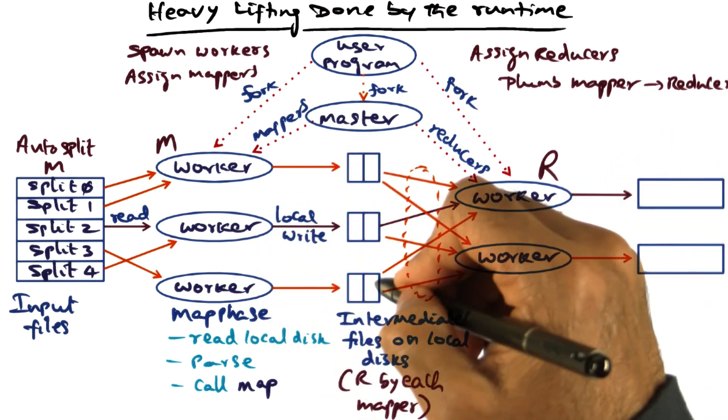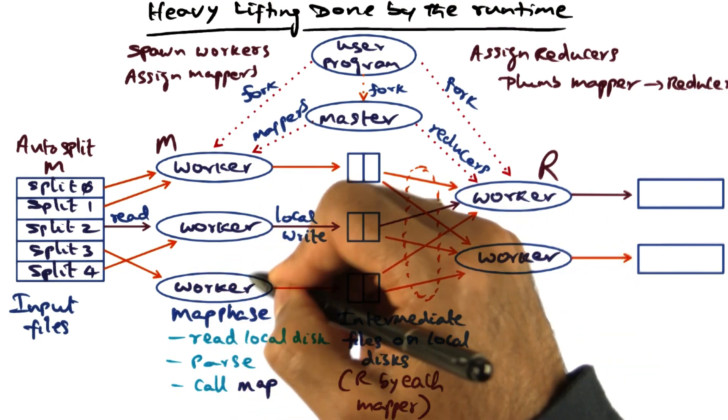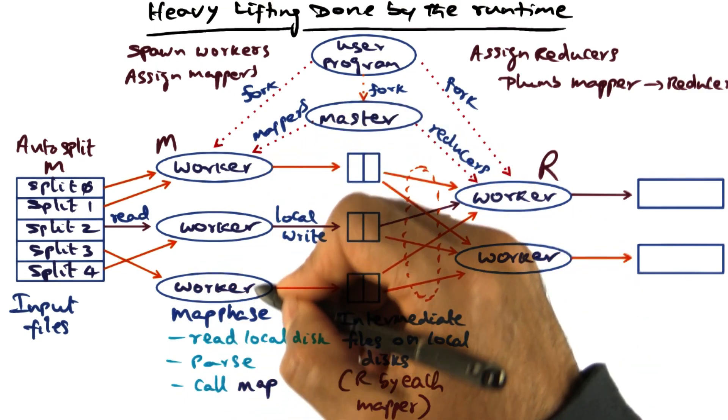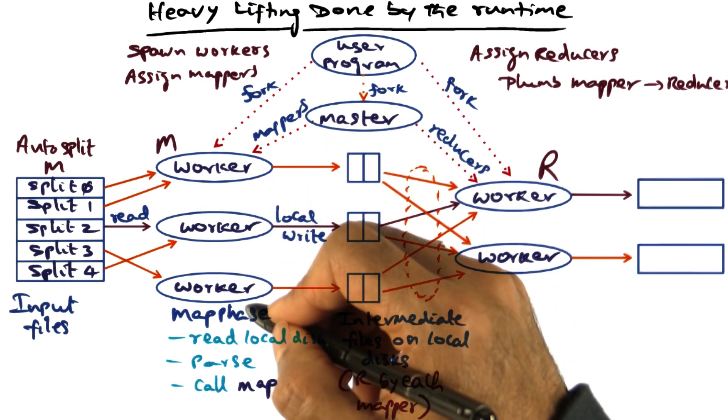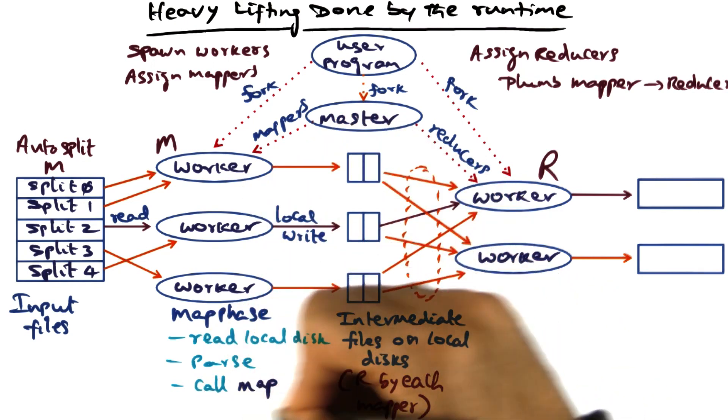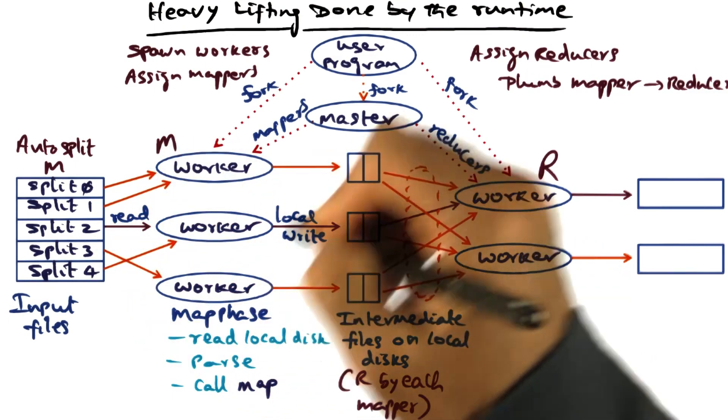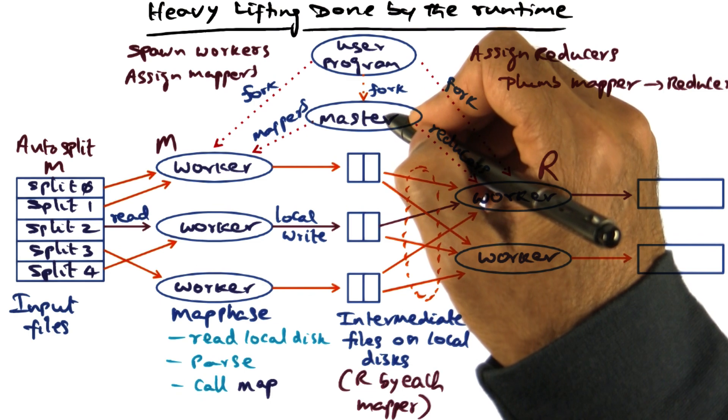All of these intermediate files are stored on the local disk associated with each of these computational nodes carrying out the worker function corresponding to the map phase. When they are done with the map operation for the split they are handling, the worker will inform the master that they're done.